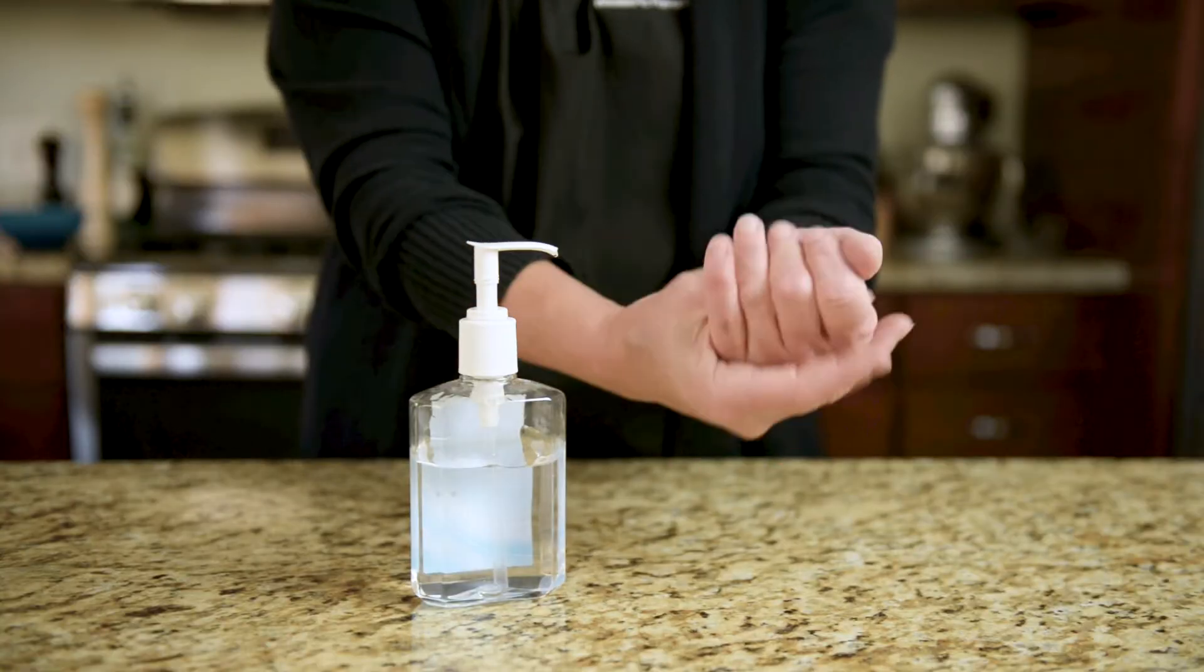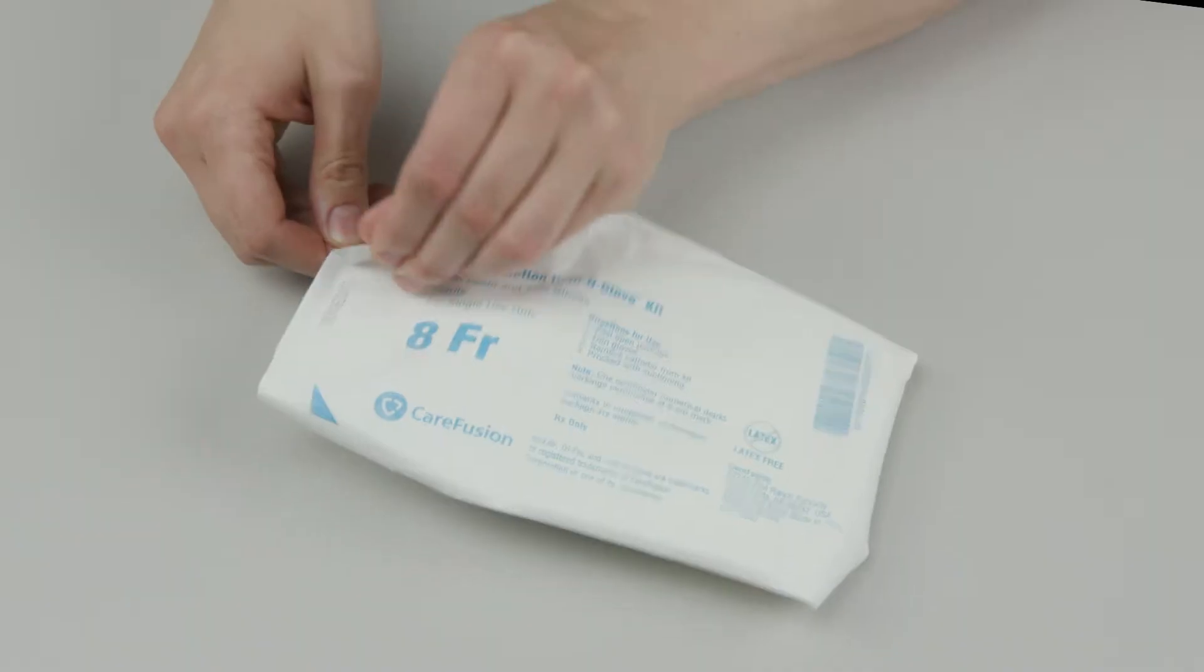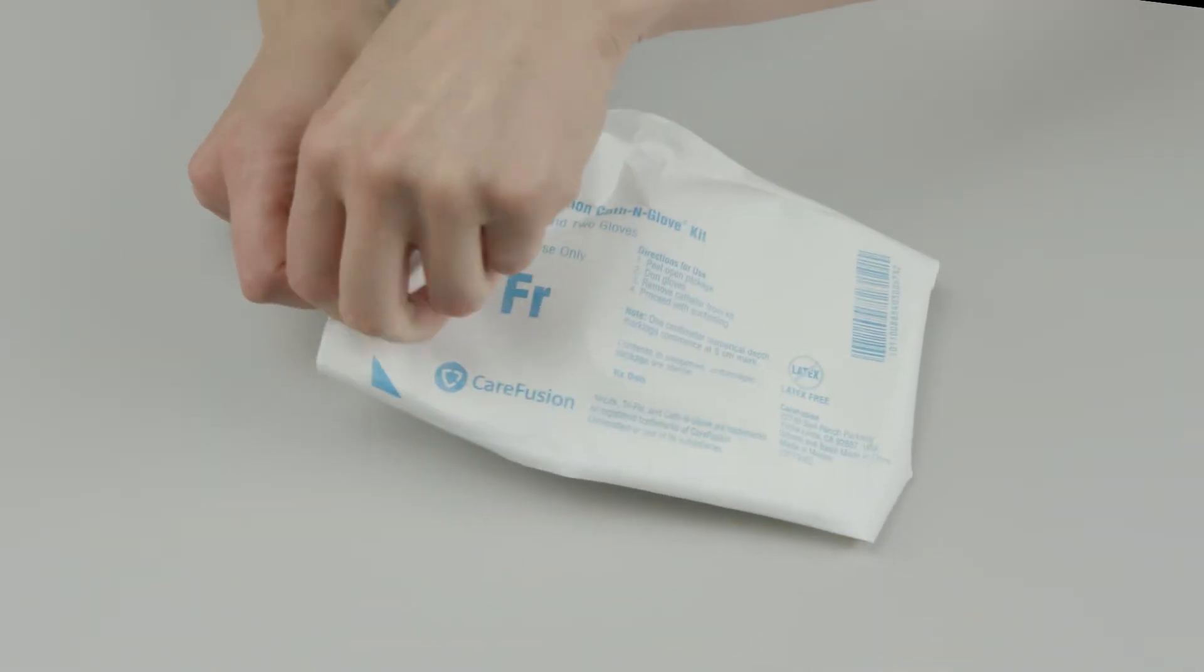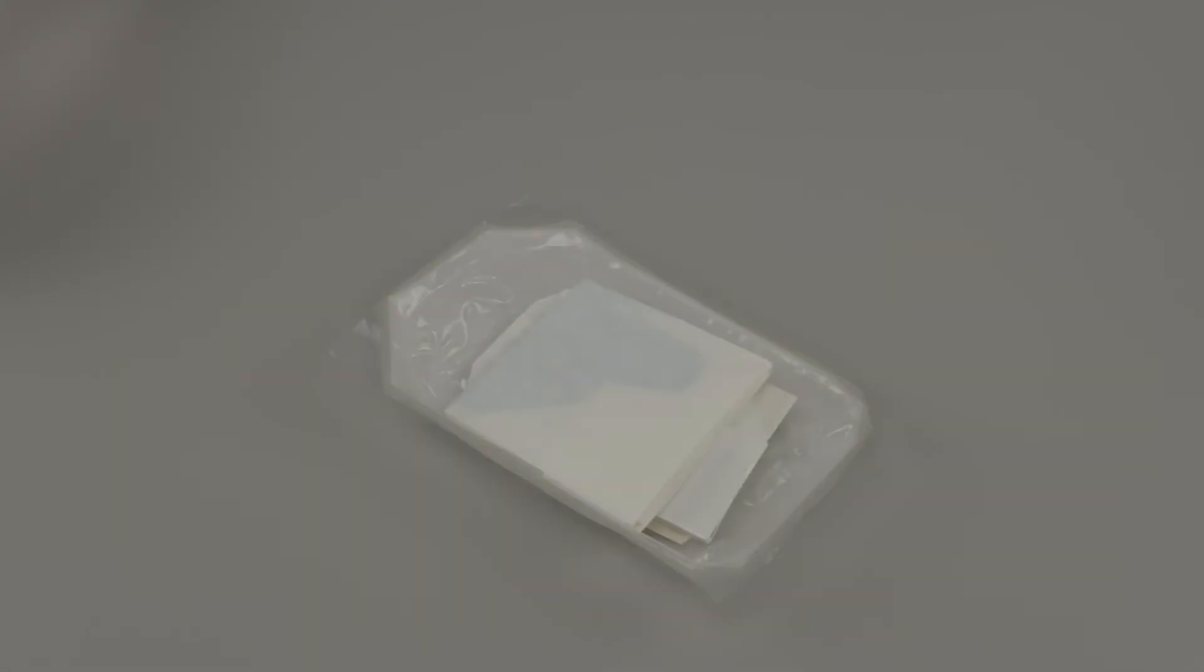Remove the non-sterile gloves and clean your hands. Open the suction catheter kit. The inside of the package and all of the items in the kit are sterile. Do not touch an item in the kit until you are ready to use it.